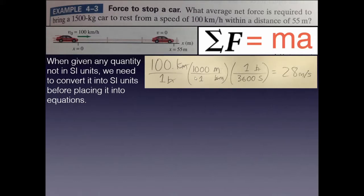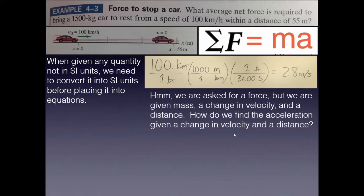So I'm going to show you that here. 100 kilometers per hour. Convert the kilometers to meters by multiplying by 1,000 over 1. Cancel the kilometer units. Then the hours, I'm going to multiply by 1 over 3,600 to get rid of hours and convert to seconds, because 1 hour is 3,600 seconds. And when I do that, 100 times 1,000 divided by 3,600, I get 28. So that's the initial velocity of the car. The final velocity is 0. And I have the change in position, the displacement, 55 meters.